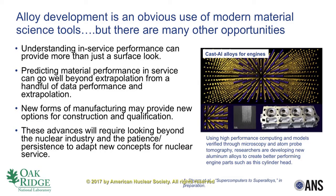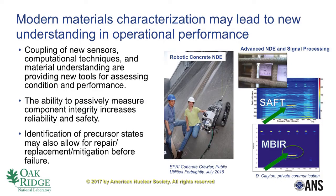The next areas I'll cover: can we predict material performance, allowing us to go beyond simple extrapolation of data? Can we talk about advanced manufacturing and non-destructive evaluation tools? Modern materials characterization and the ability to predict performance may lead to new understanding and operational settings — for instance, combining new sensors and robotics like EPRI's concrete crawler, coupled with materials understanding, modeling and simulation, will allow new tools to assess condition and performance throughout lifetime. The ability to passively measure component integrity helps increase reliability and safety, and identification of precursor states may allow us to repair, replace, or mitigate damage before failure.